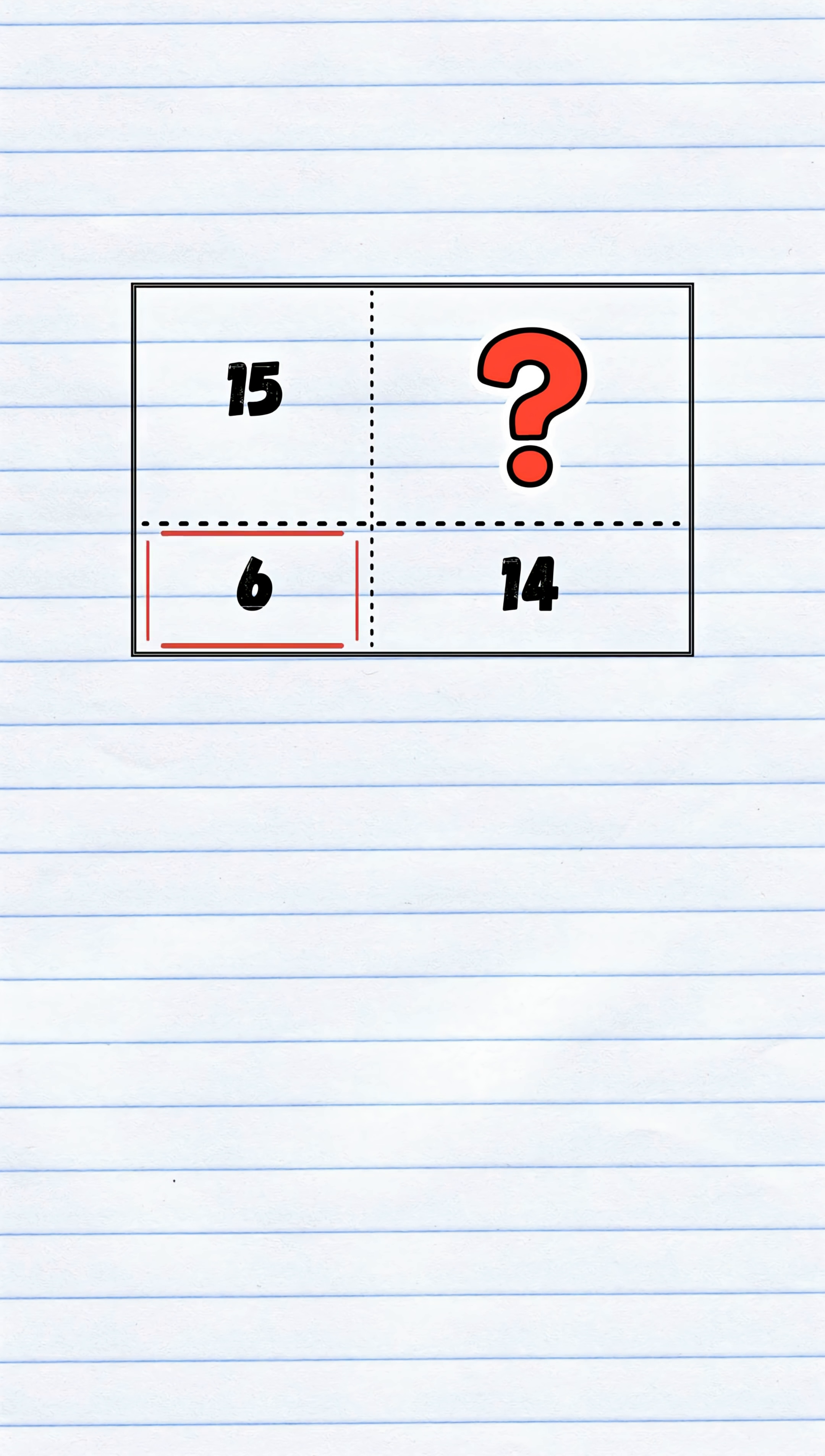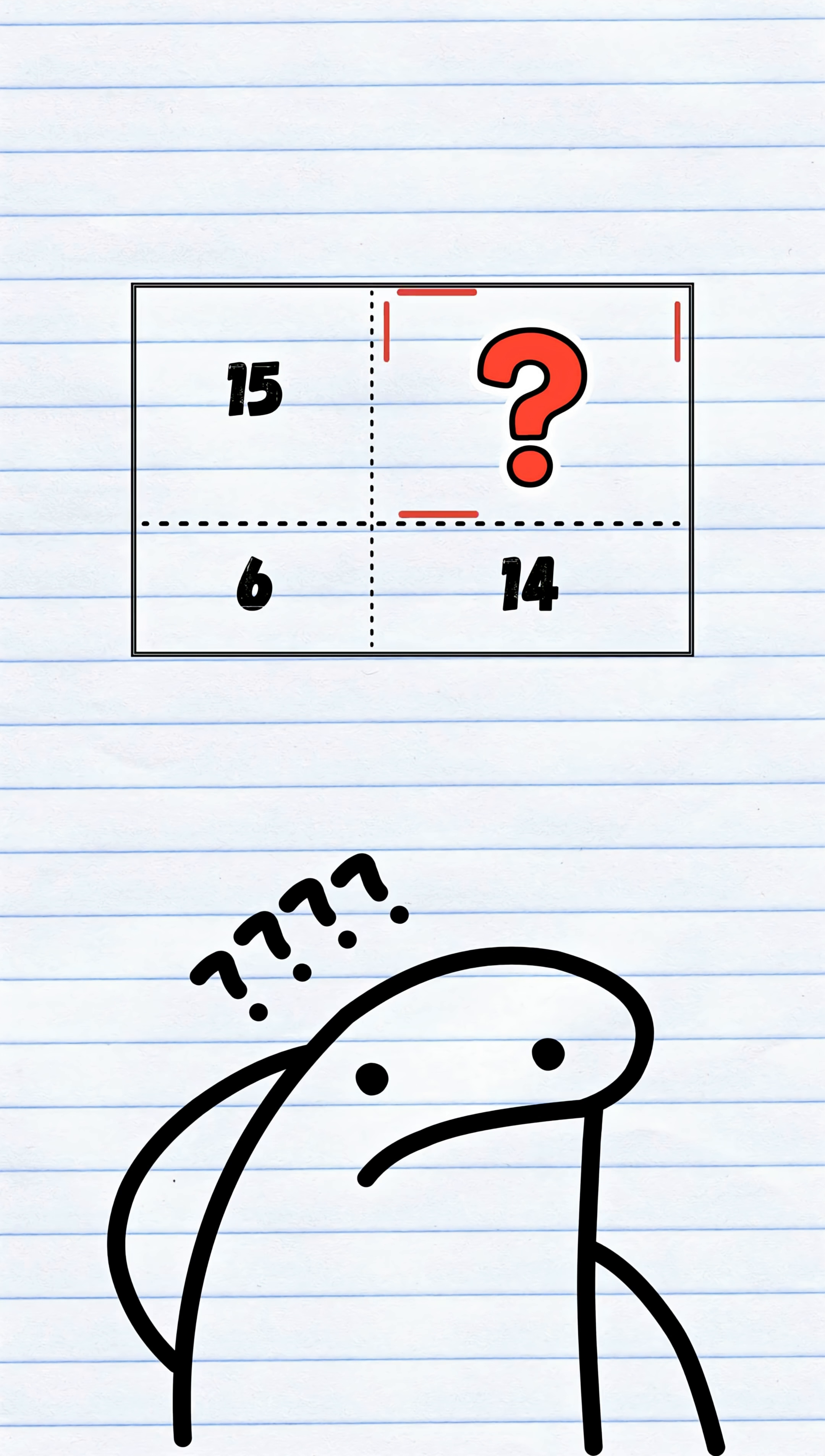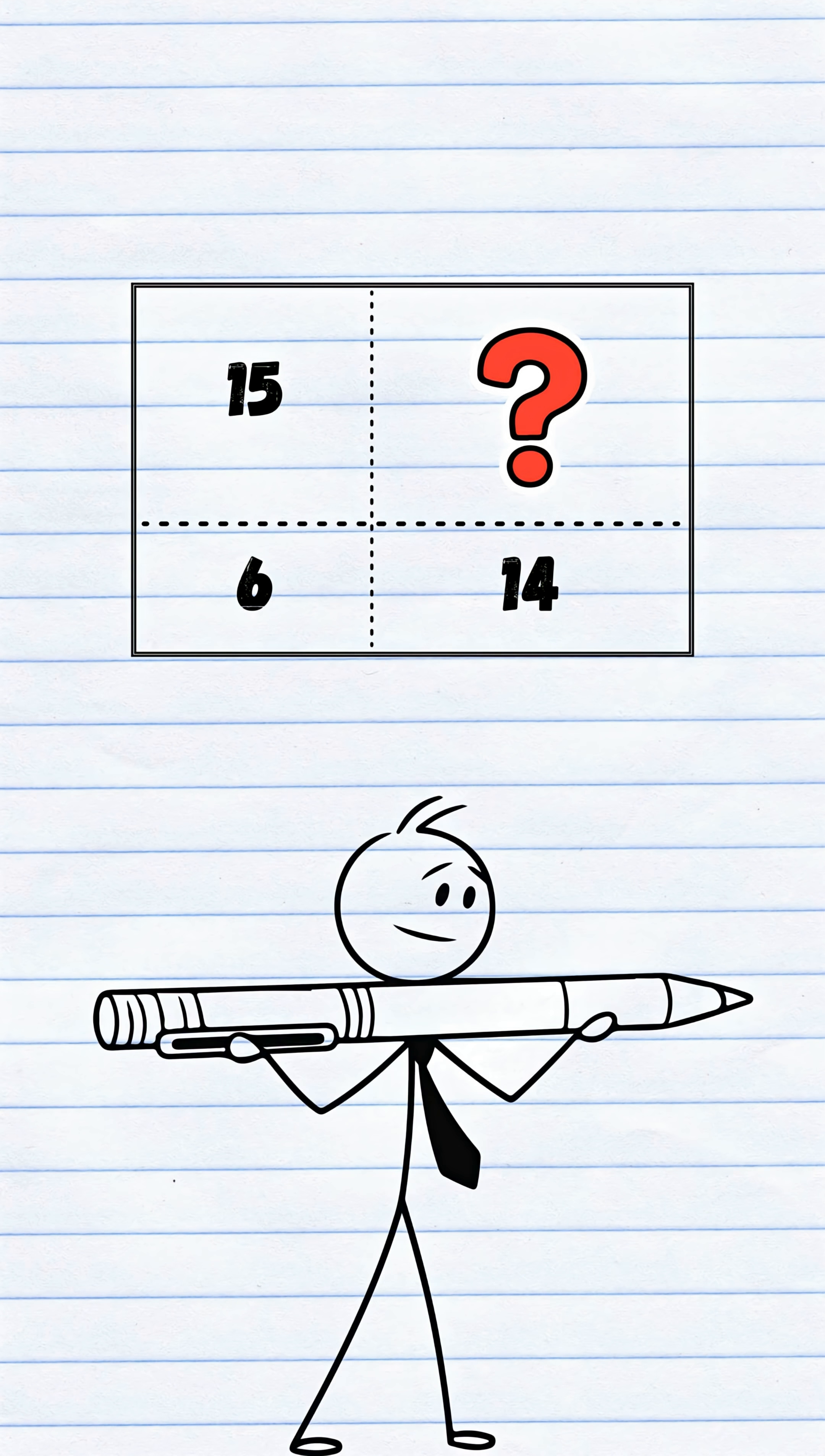Top left is 15. Bottom left is 6. Bottom right is 14 squares. But the top right? Nobody knows. Let's see if you can figure it out before I reveal the answer.